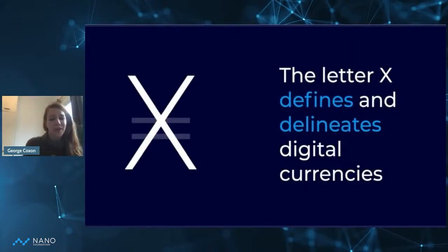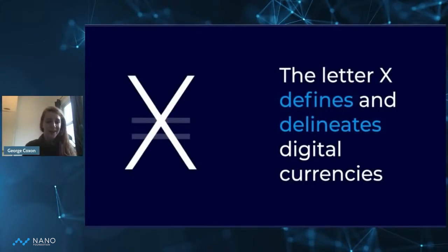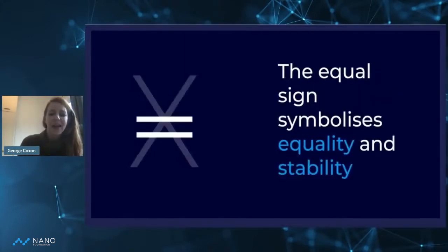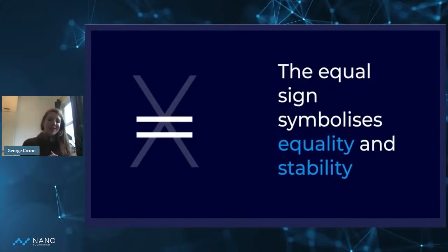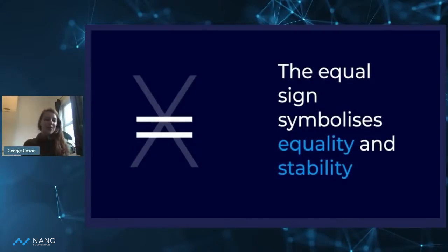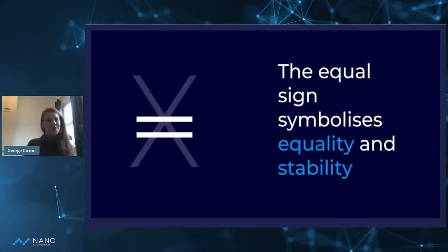With our currency symbol, the letter X defines and delineates digital currencies to conform with ISO standards, and the equal sign symbolizes equality and stability with Nano. I'm not talking about price stability — I'm talking about stability of being a global currency and a new technology that will stably be able to help others moving forward.